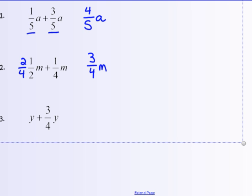And the last one, number three: y and three-fourths y. Easiest to make this into four-fourths. Four-fourths, which equals one y. Four-fourths y plus three-fourths y gives me seven-fourths y.